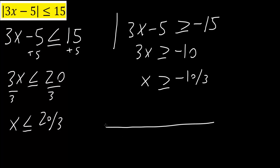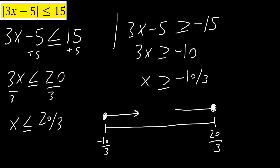On the number line, this point here would be negative 10 over 3, and this point here would be 20 over 3. We'll draw a dotted line at each. Since x is greater than or equal to negative 10 over 3, the arrow goes to the right. Likewise, x is less than or equal to 20 over 3.